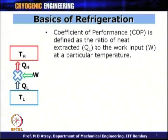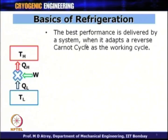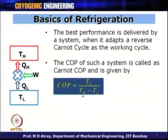COP (coefficient of performance) is defined as the ratio of heat extracted QL — the refrigeration effect — to the work input W. Mathematically, W = QH − QL, so COP = QL / (QH − QL). The best performance is delivered by a system using a reverse Carnot cycle. The Carnot COP (ideal COP) is given by TL / (TH − TL), and it is often used as a benchmark to compare the performance of any refrigeration system.